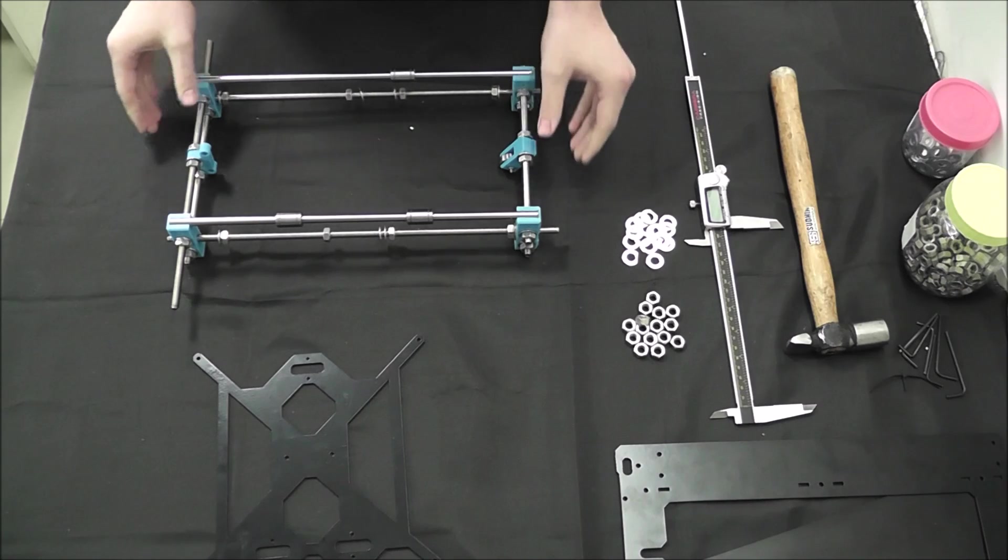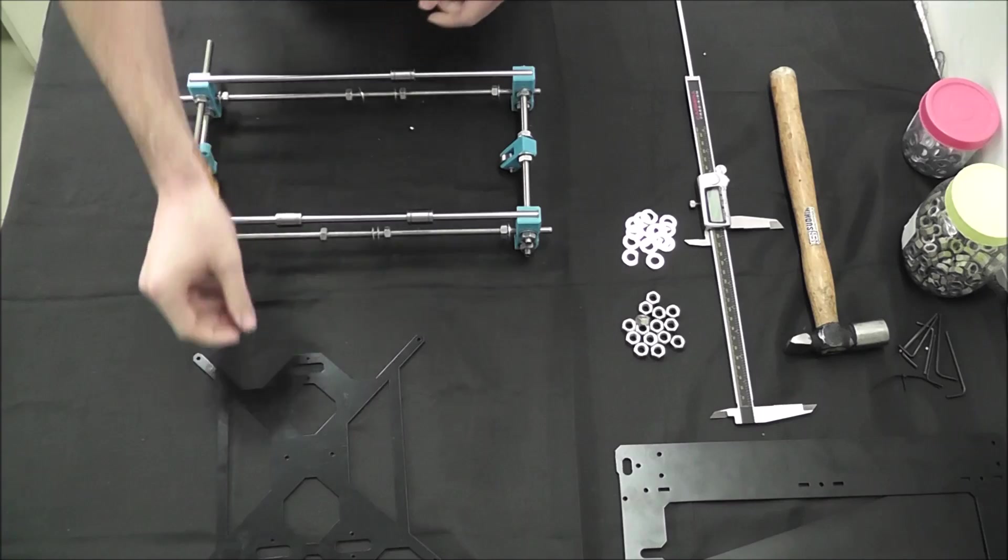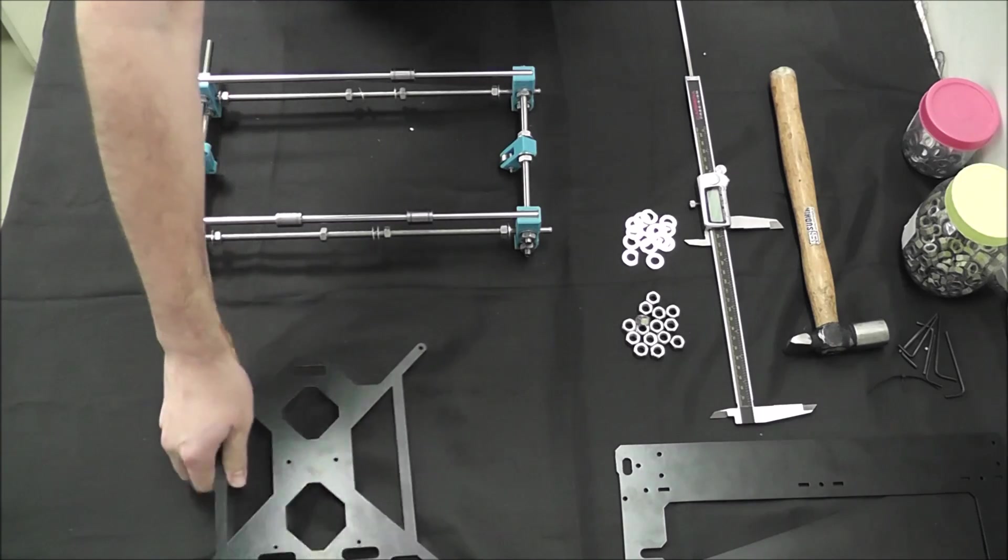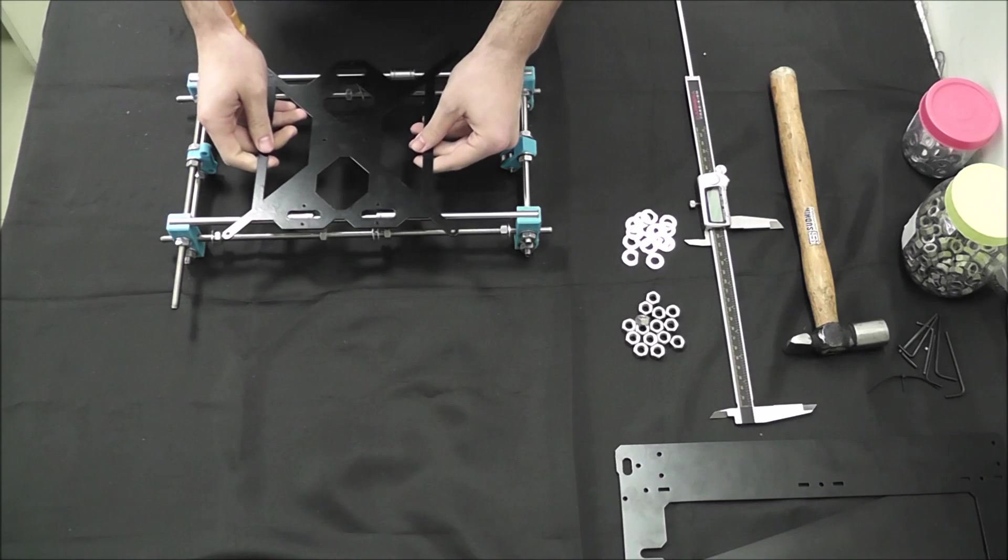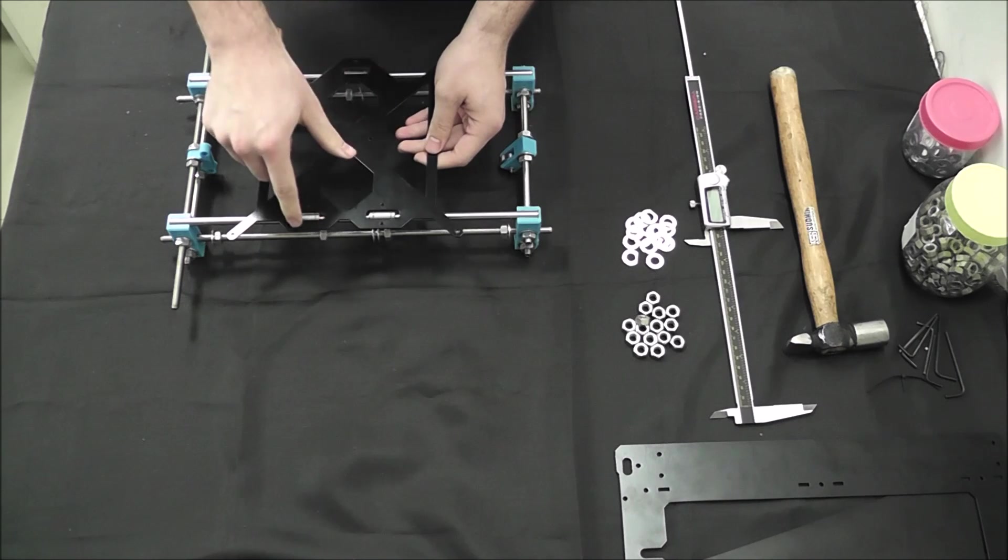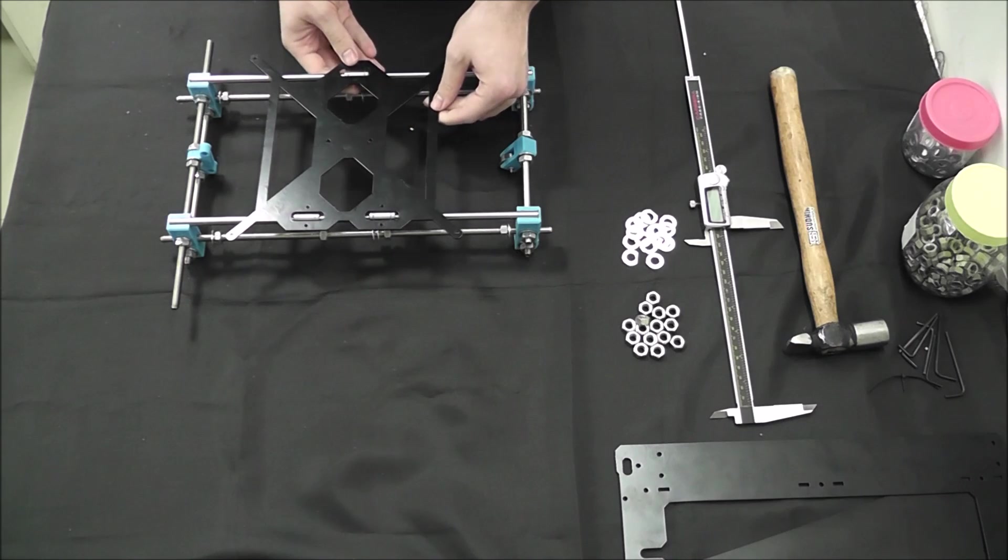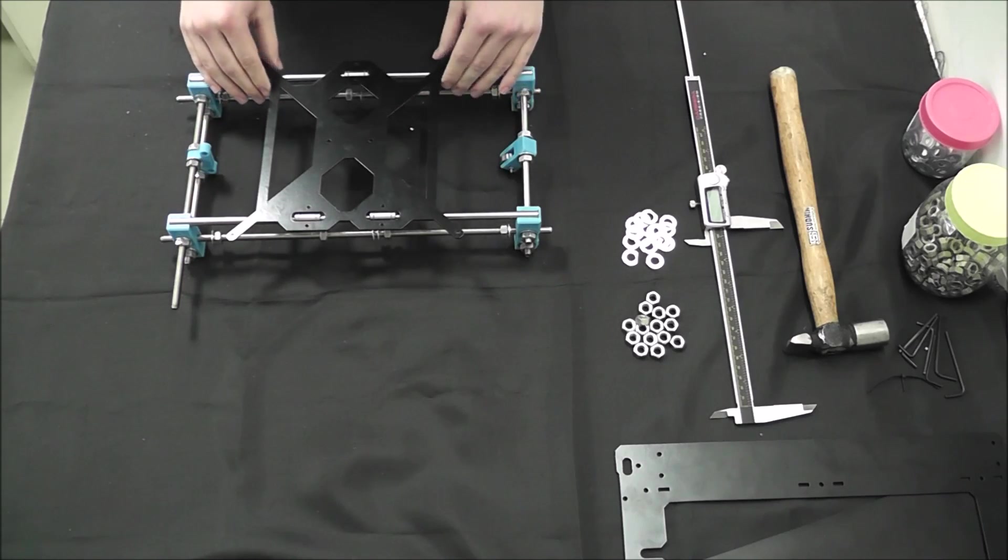So with that said we can worry about the distance of the bottom rods later when we're ready to put it on the frame. The bed here is going to sit on top of these rods and be secured in place using zip ties that go through these holes on either side of the bearing slots. So next we're going to add this into the frame and we'll be ready to continue.